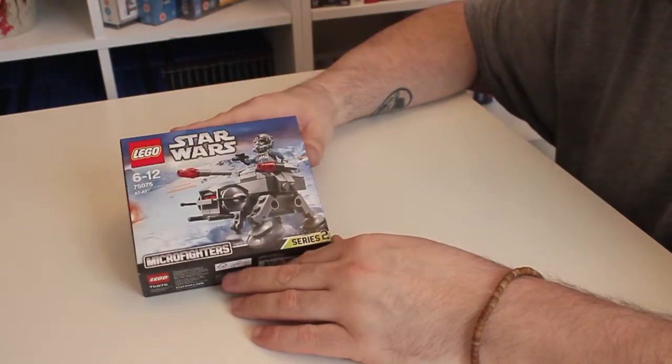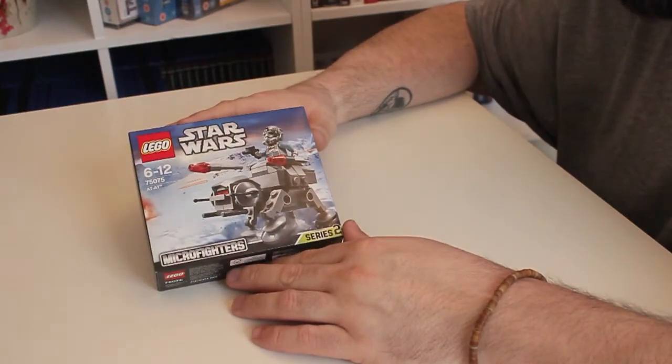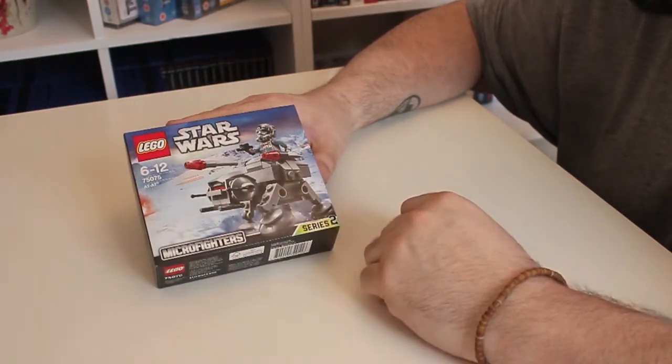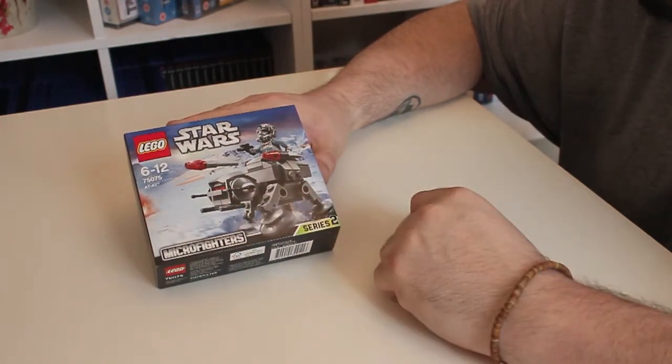We're going to kick off with this Star Wars Microfighter set. This is set number 75075, it's the AT-AT from Series 2.